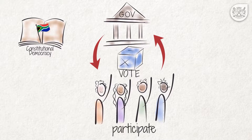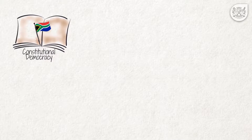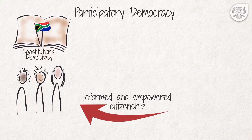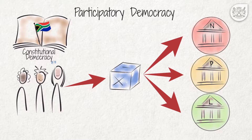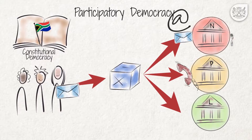South Africa's constitution requires public administration to foster participatory democracy on the basis of informed and empowered citizenship. Thus, participatory democracy means that citizens have not only the right to vote in national, provincial or local government elections, but also to ongoing and regular interaction with the institutions and the elected people that represent them.